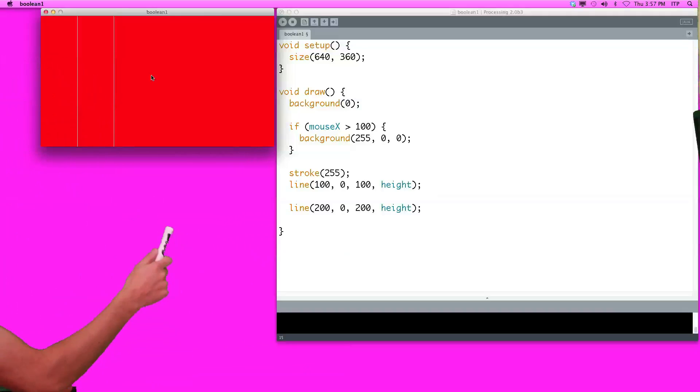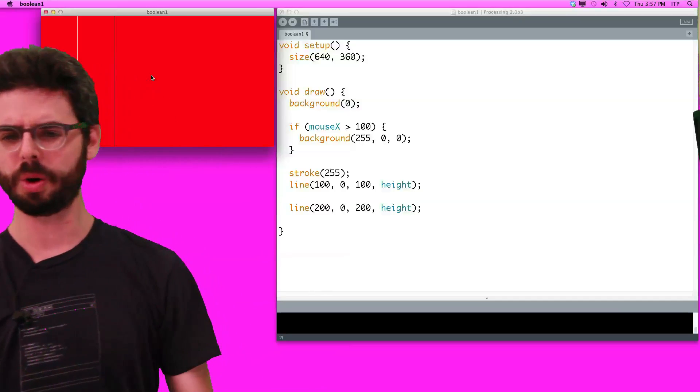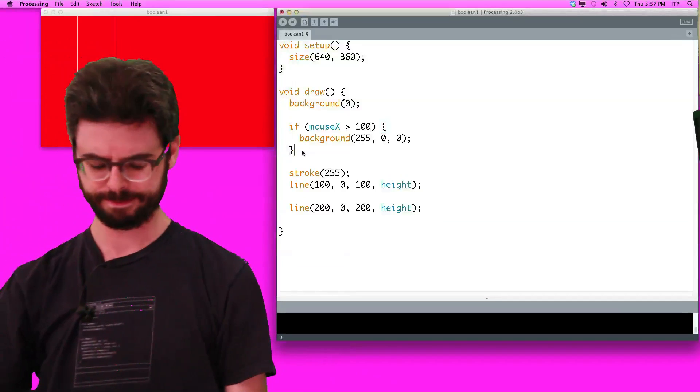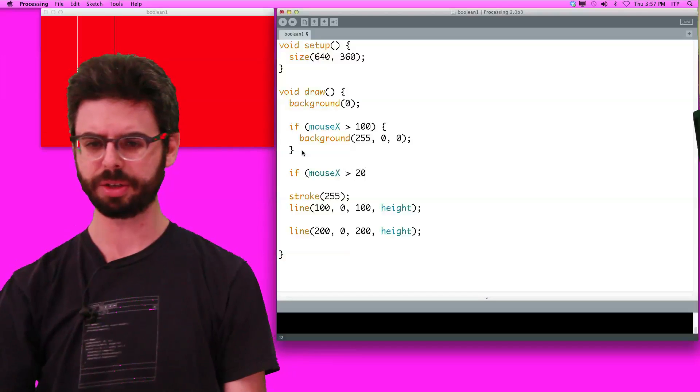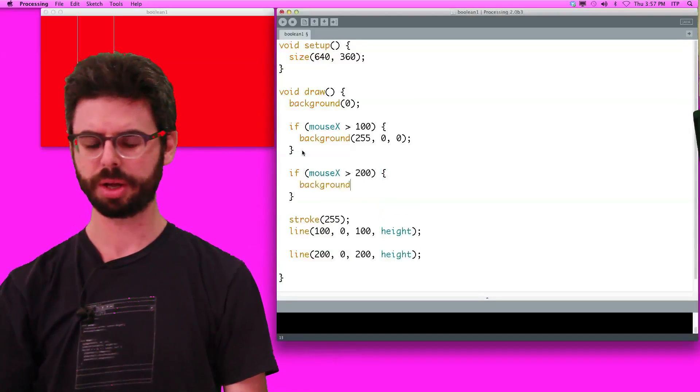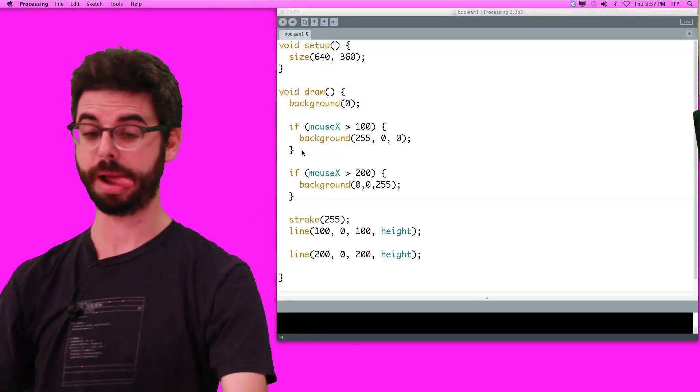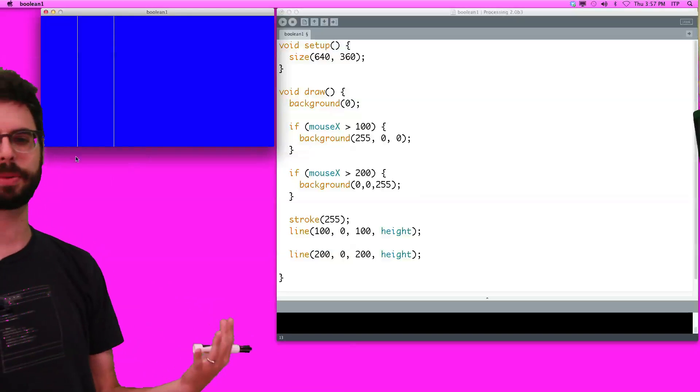So here we have black background. Here we have red background. Here we have red background. What if I want a third option? Black to red to say blue. So I know I could say, if mouseX is greater than 200, draw a red background, a blue background.